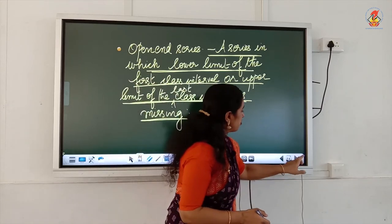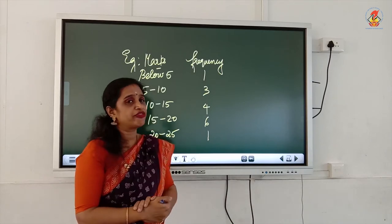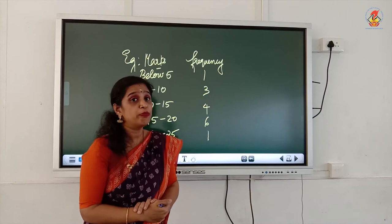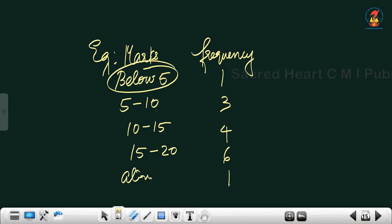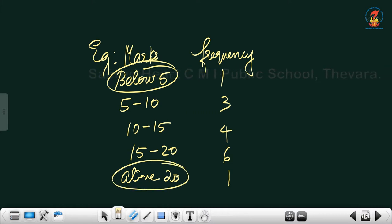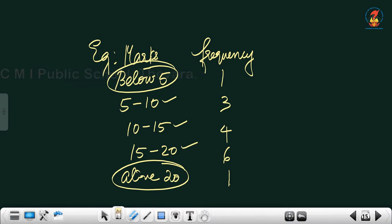Let us see an example. In this open-end series, the first class interval is given as 'below 5' and the last class interval is given as 'above 20.' The other class intervals are 5 to 10, 10 to 15, and 15 to 20. So there is no lower limit for the first interval and no upper limit for the last interval — we have to convert them into proper class intervals.